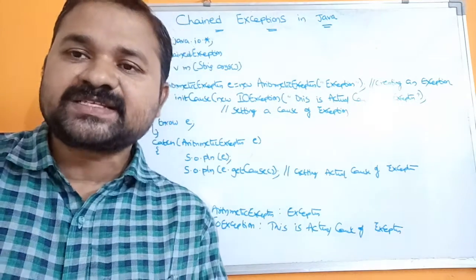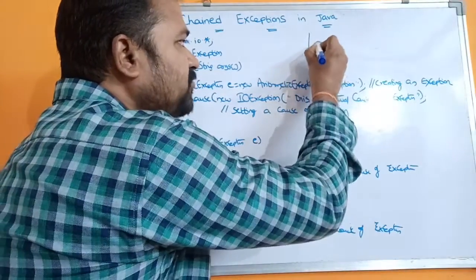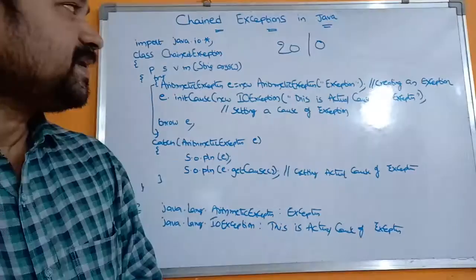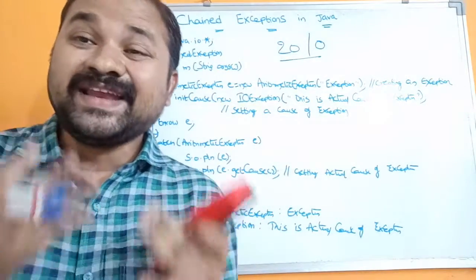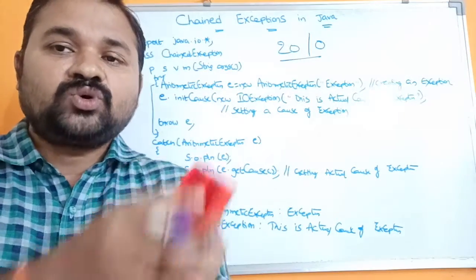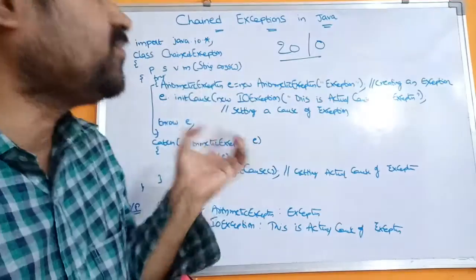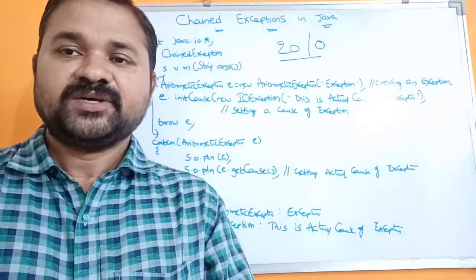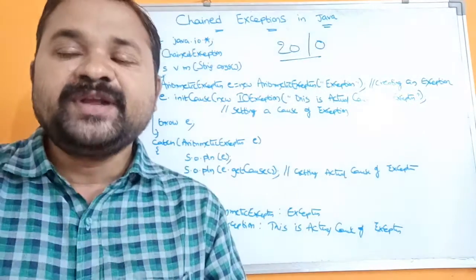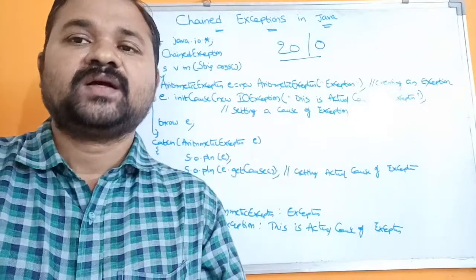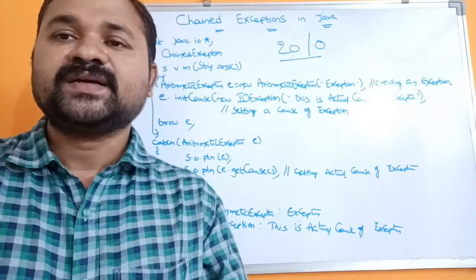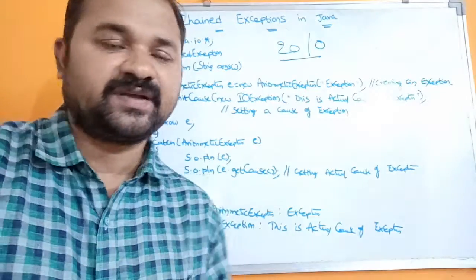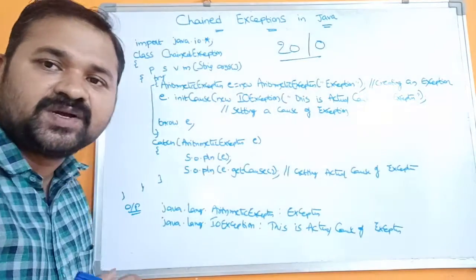Let's take an example: ArithmeticException. The best example for ArithmeticException is division by zero — denominator value is zero while numerator is any value, such as 10, 20, 30, 75, or any other value. Here, the actual exception is ArithmeticException, but the cause of this exception — the root cause — is an IOException. So in addition to displaying ArithmeticException, we also display its root cause, the IOException message. That is chained exception.